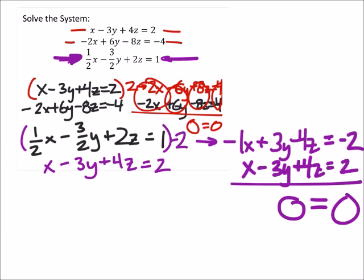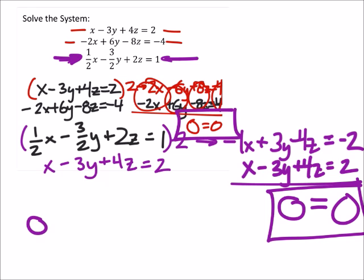Since that's the case, this bottom equation is the same as the top two. And we know now that, well, since zero equals zero always and forever, this one just has infinite solutions.